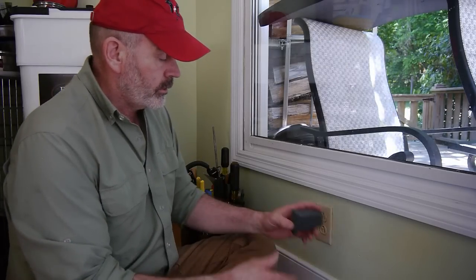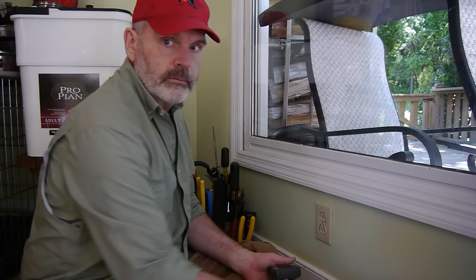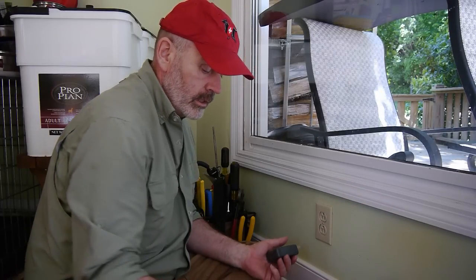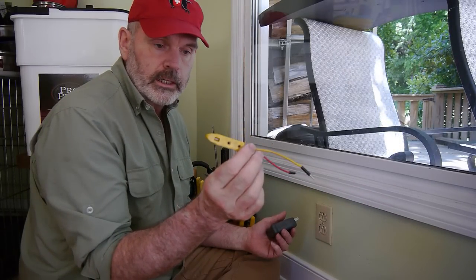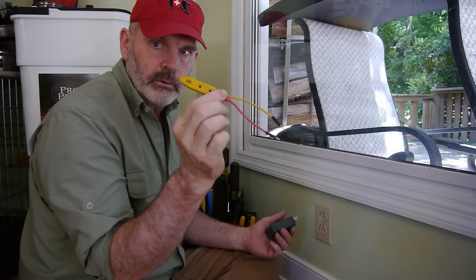And the first thing we have to do is turn off the power. Now if you have a helper you can cell phone each other and flip switches until you get the right one. And then you can test it with a meter like this one. This is an inexpensive meter or even more inexpensive, this is just a neon little light. You can do any kind of voltage testing with that.